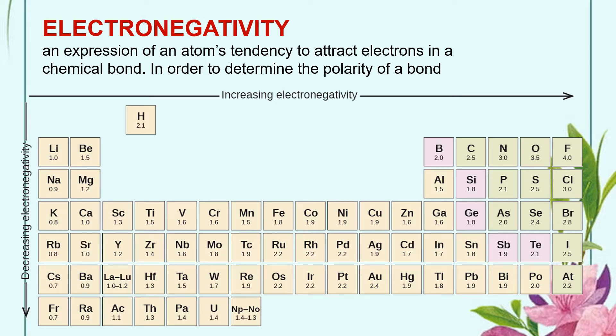The electronegativity increases from left to right of a period and decreases from top to bottom of a group. Take note also that the higher the value of EN or electronegativity, the element tends to attract electron towards itself. So what is the connection of electronegativity to the polarity of bonds?